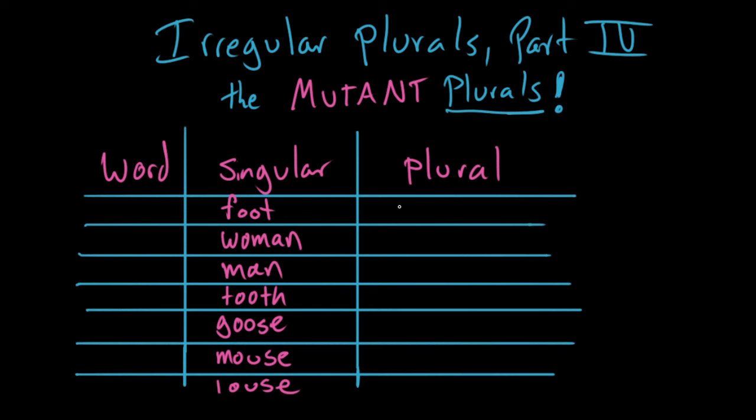So the plural of foot is not foots, but feet. The plural of woman is not womans, but women. The plural of man is not mans, but men. The plural of tooth is not tooths, but teeth. The plural of goose is not gooses, but geese. The plural of mouse is not mouses, but mice. The plural of louse is not louses, but lice.